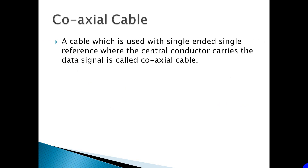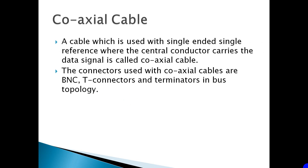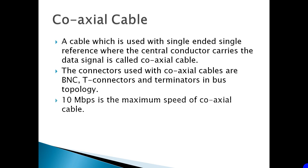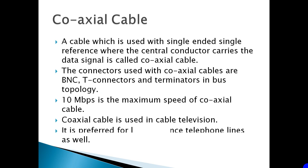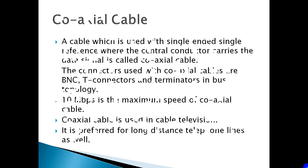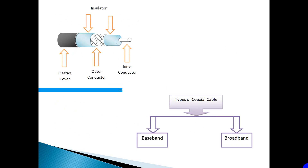Coaxial Cable. It is a cable which is used with single-ended single reference where the central conductor carries the data signal. The connectors used with coaxial cables are BNC, T connector, and terminators in bus topology. The maximum speed of coaxial cable is 10 Mbps. It is used in cable television as well as for long-distance telephone lines. The types of coaxial cable are baseband and broadband.